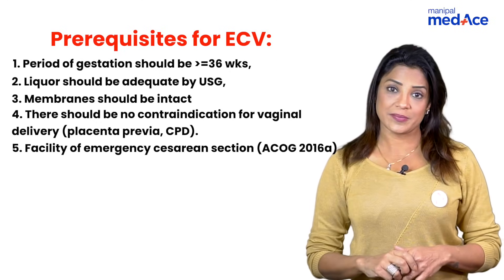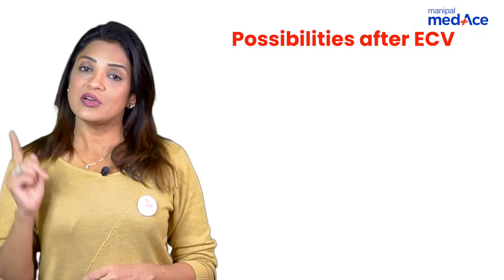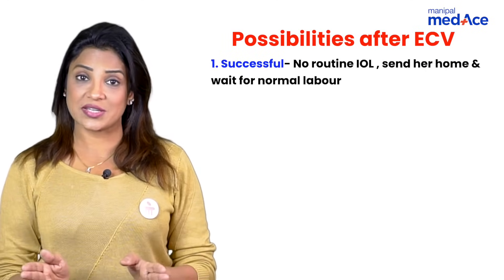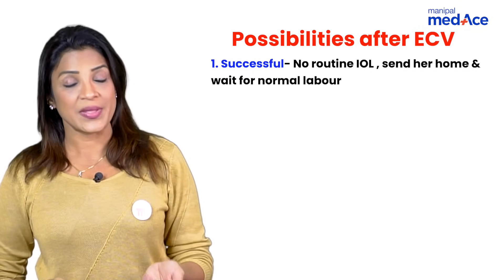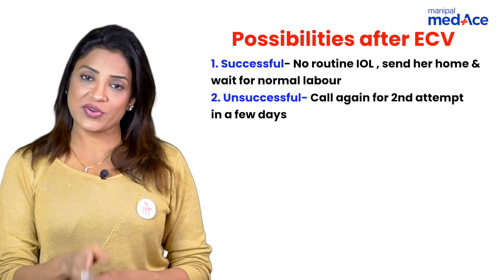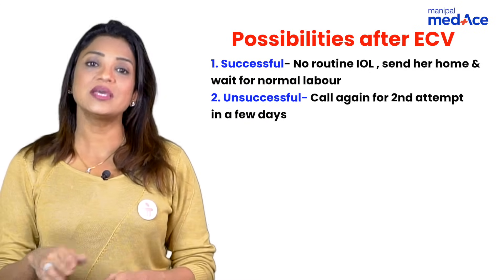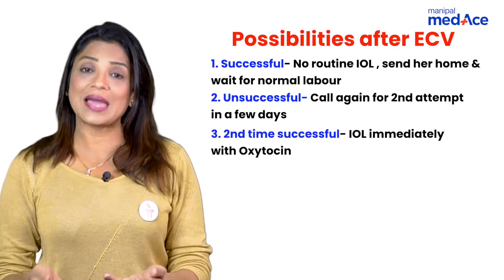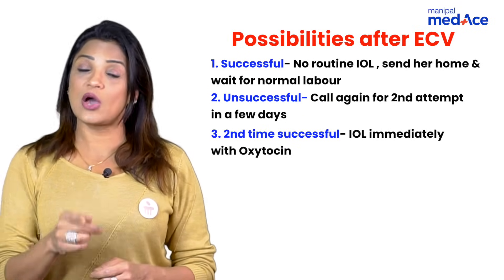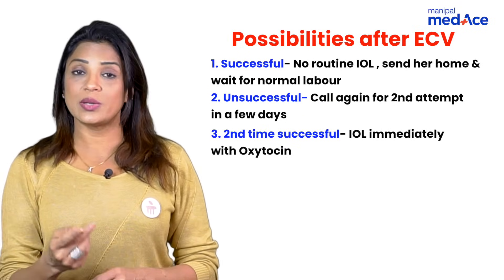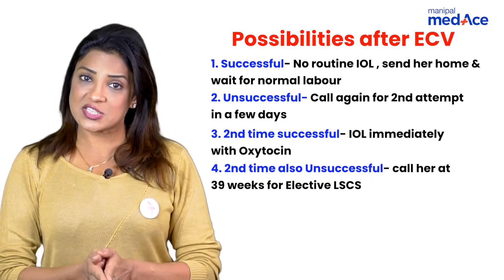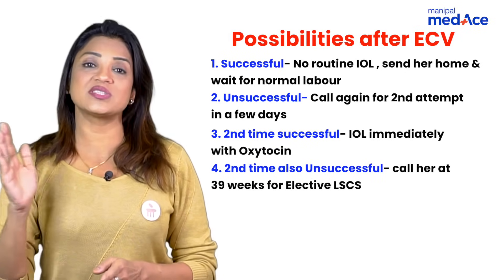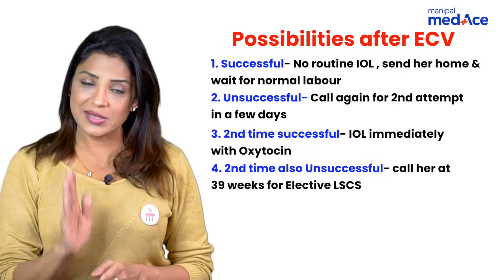After ECV, the first possibility is that it is successful in the first attempt — you send the patient home and tell her to come back when she is in labor. Second, if it was unsuccessful the first time, you call her back in a few days, do it again, and if successful this time, you do an immediate induction of labor — you don't wait. If the second attempt is also unsuccessful, send her home and book her for caesarean section at 39 weeks.